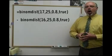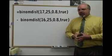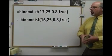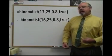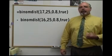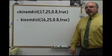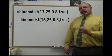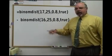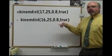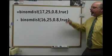B-I-N-O-M-D-I-S-T, parentheses. When you open up that first parentheses, it asks you—it'll prompt you questions in Excel. It does it a little bit backwards, it asks you for the k number first. In this problem, you would type in equal BINOMDIST, parentheses, 17 comma 25 is the number of trials, comma, the p is the percentage of success is point eight.